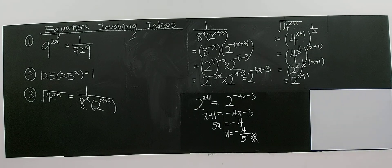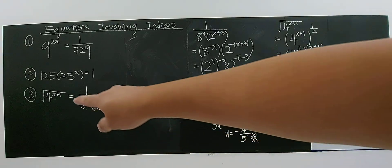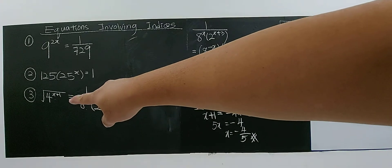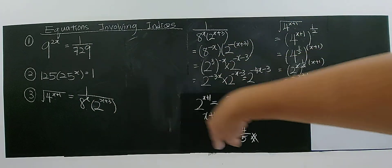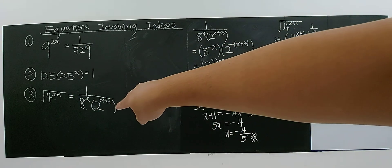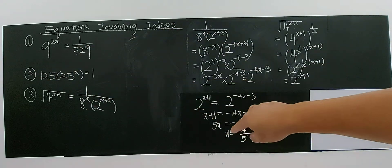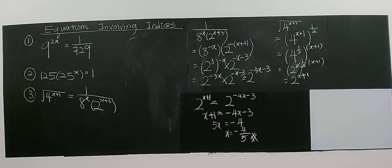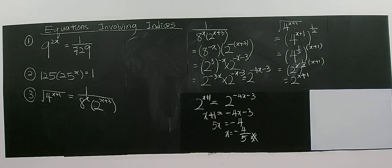You can also verify this using a calculator by evaluating the left-hand side and right-hand side separately with this value. If they give the same result, then x equals negative 4 over 5 satisfies the equation. This is a very basic equation involving indices — see you in the next video for more complicated equations involving indices.